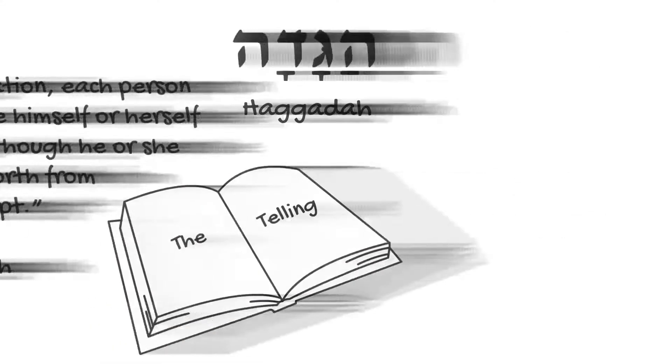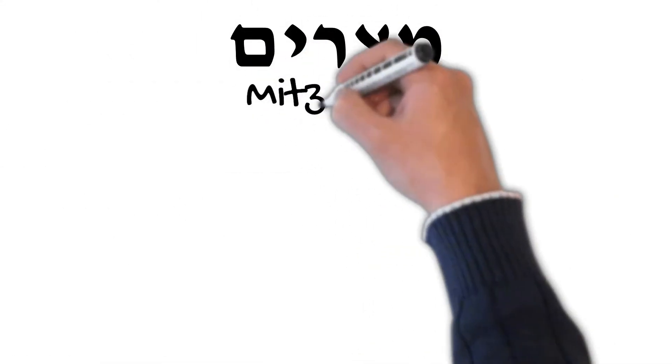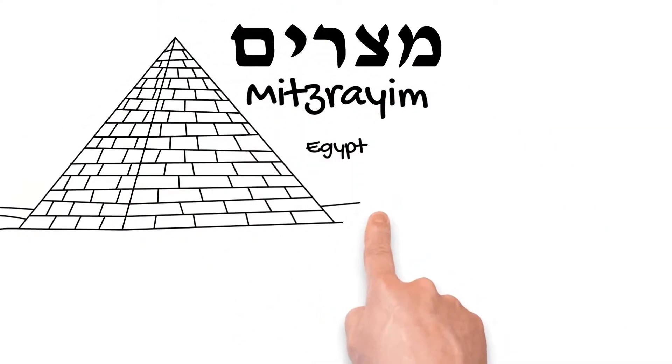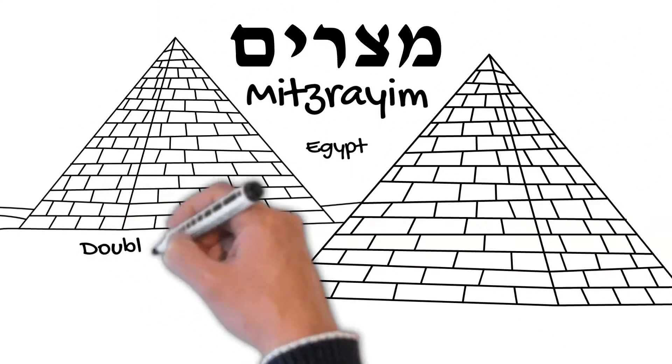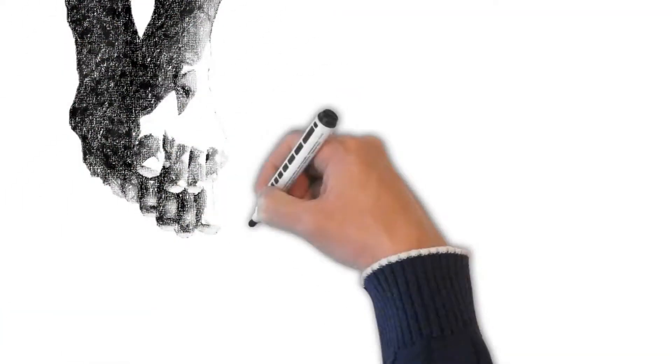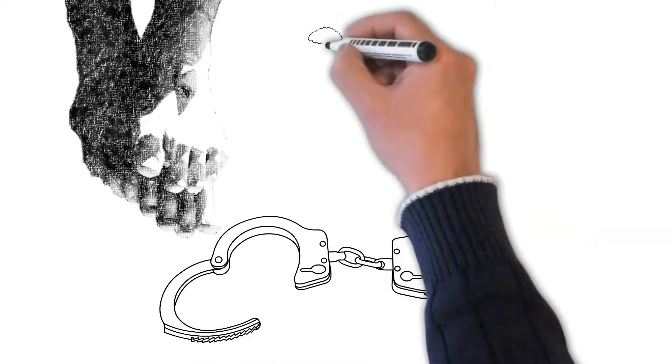The Hebrew Mitzrayim, Egypt, means double distress or compounded strife. Thus, we acknowledge that in Messiah, we are set free from sin and the strife that compounds it.